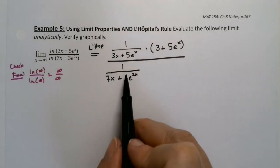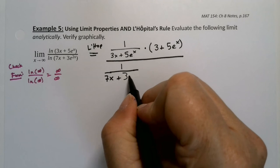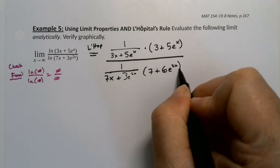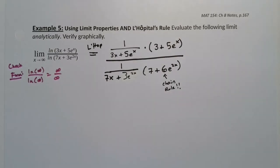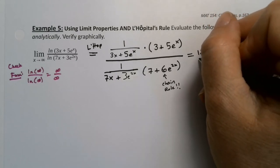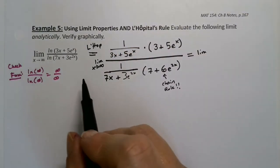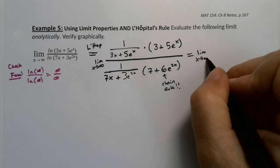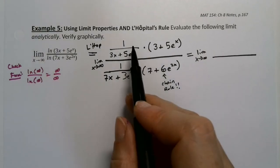That gives 6e^(2x) — 3 times 2 is 6. I was getting ahead of myself, sorry about that. Now I'm going to rewrite that — not applying L'Hôpital's rule again, just rewriting it because it looks a little odd. And I forgot my limit as x goes to infinity — I would lose points for that. Always keep the limit notation until you actually do your substitution.